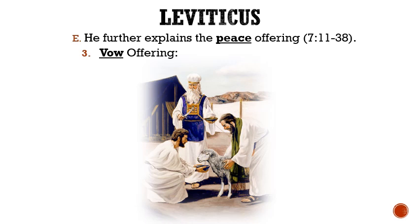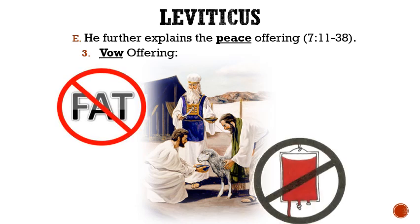If anyone ate of the offering while they were considered unclean, then they would be cut off or excommunicated from the people. With this offering, no fat and no blood was to be eaten. Eating blood was punishable by excommunication, and no animal was to be eaten that died naturally. In addition to all of these guidelines, the breast and shoulder of the sacrifices were given to the sons of Aaron.